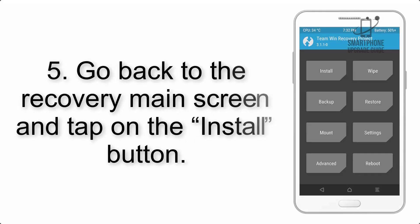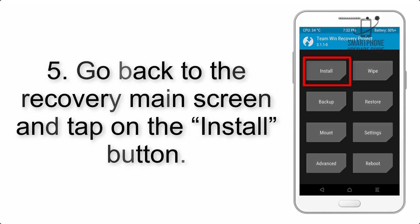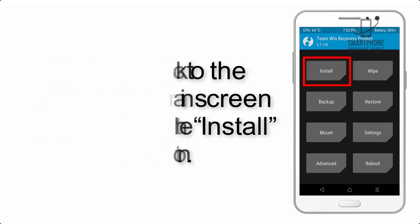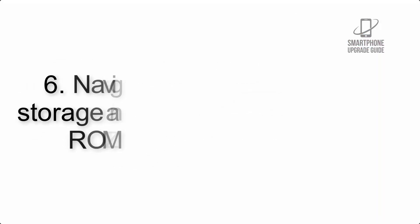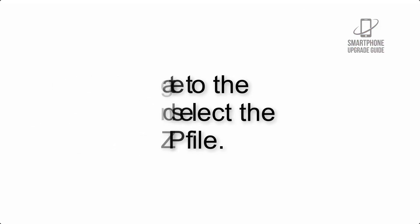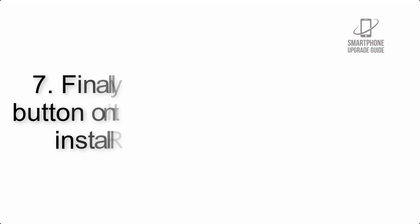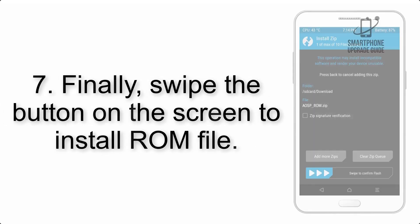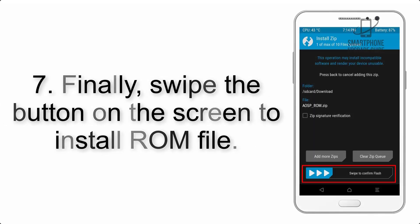Step 4: Swipe the button to wipe the device. Step 5: Go back to the recovery main screen and tap on the Install button. Step 6: Navigate to the storage and select the ROM zip file.